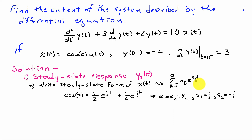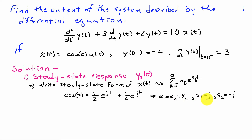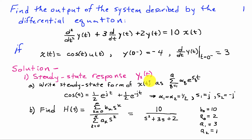Because this input is a cosine, that's easy to do. We can express cos(t) as ½ e^(jt) + ½ e^(−jt). That tells us that α₁ = α₂ = ½, s₁ = j, and s₂ = −j.